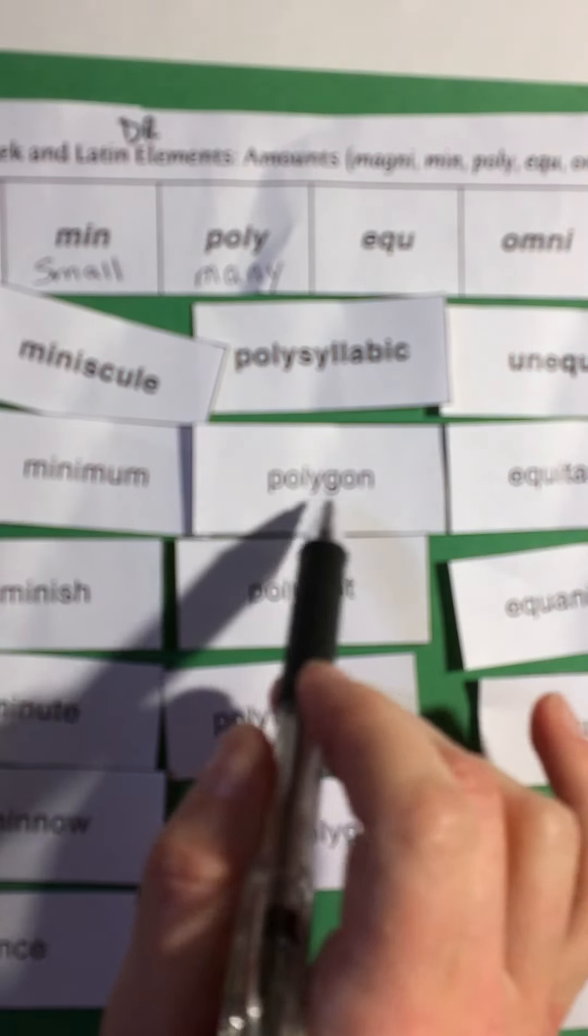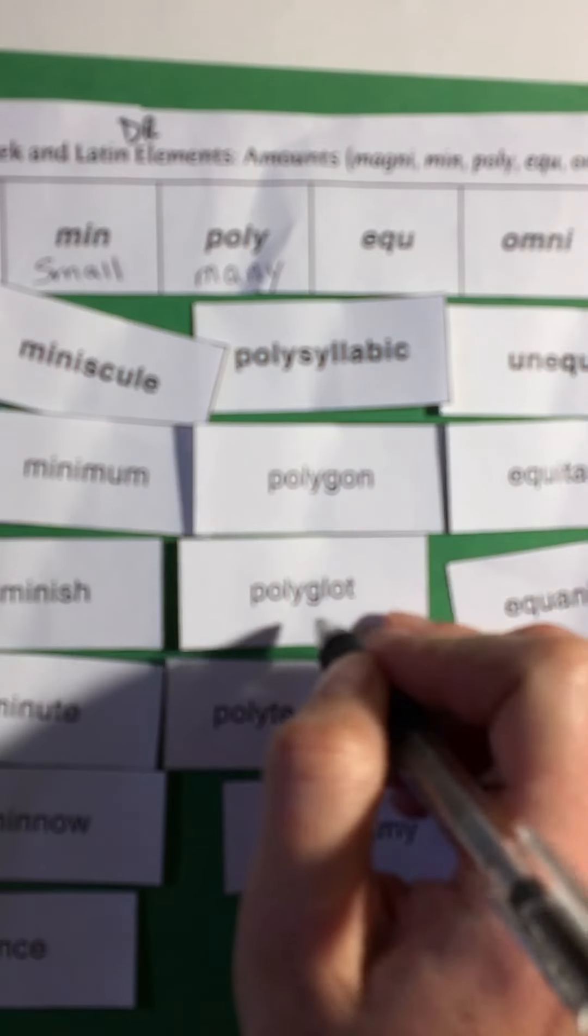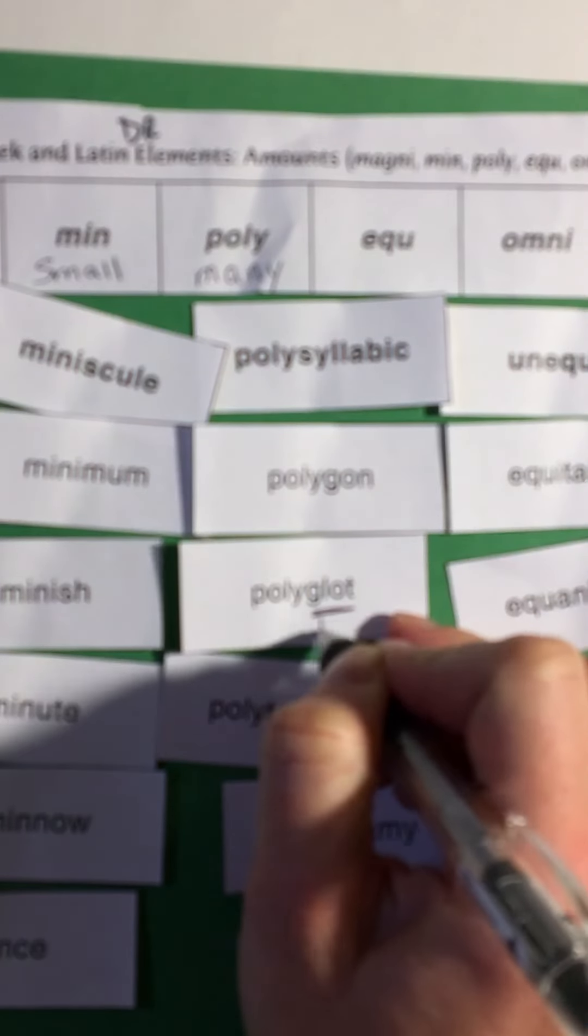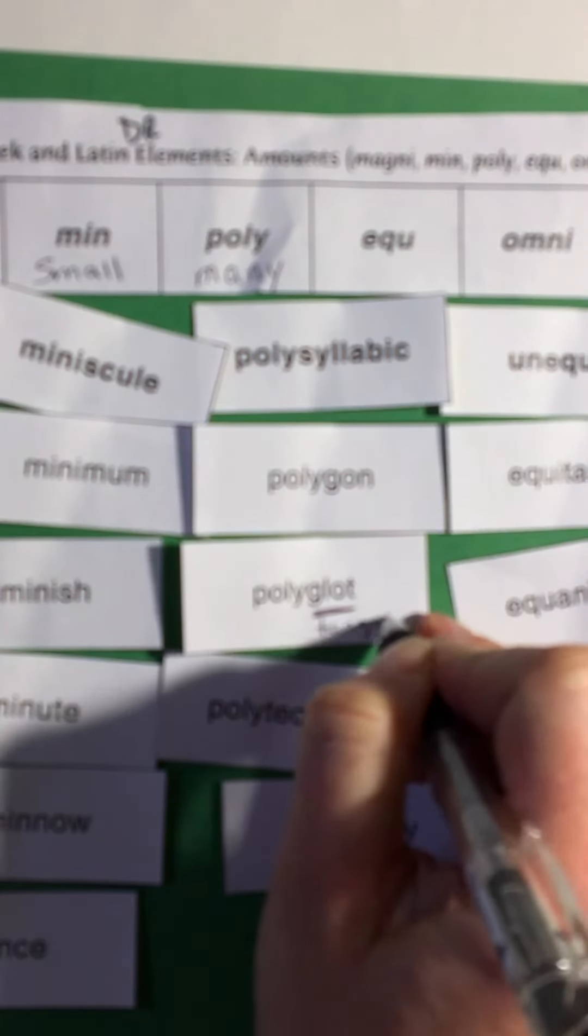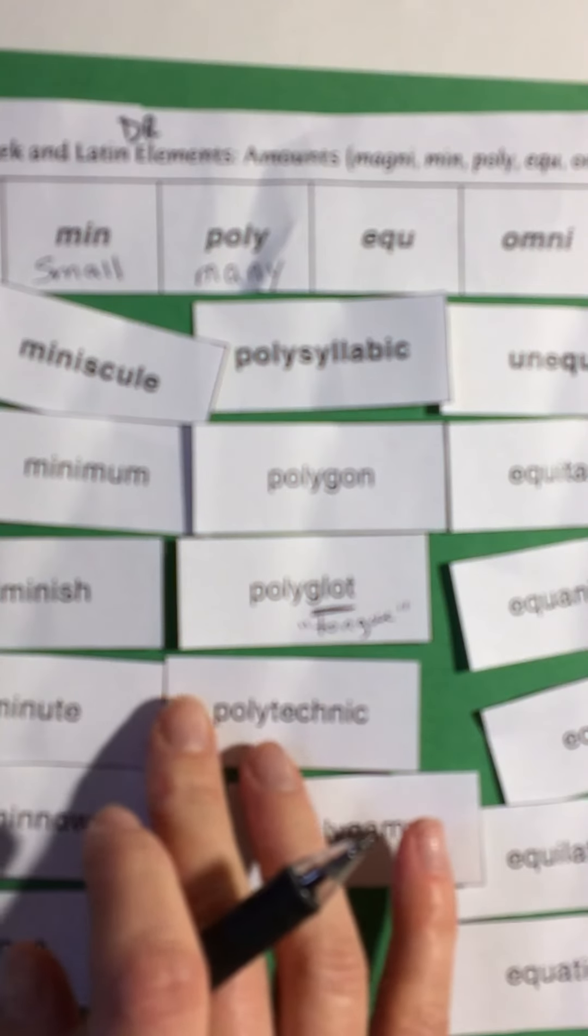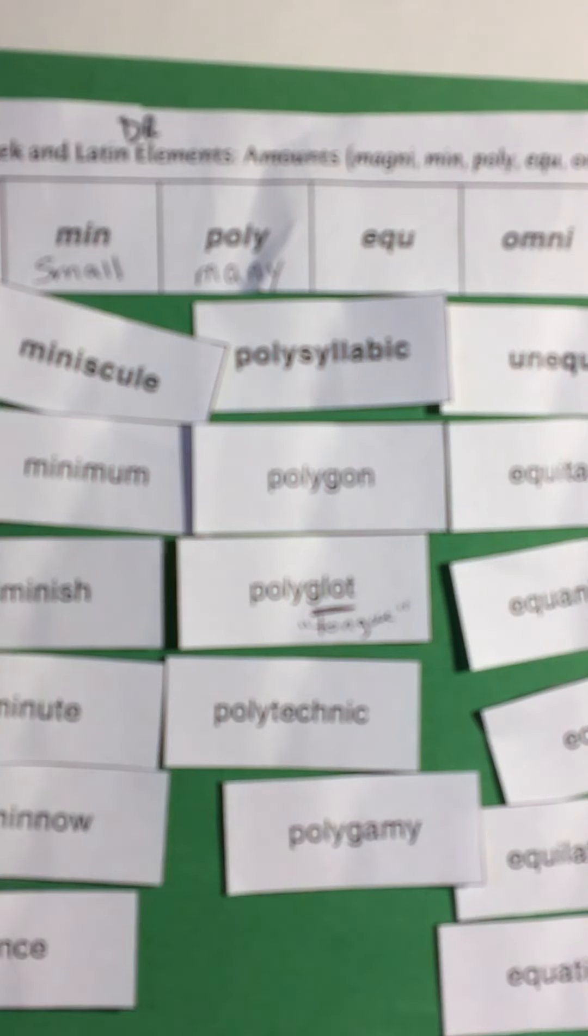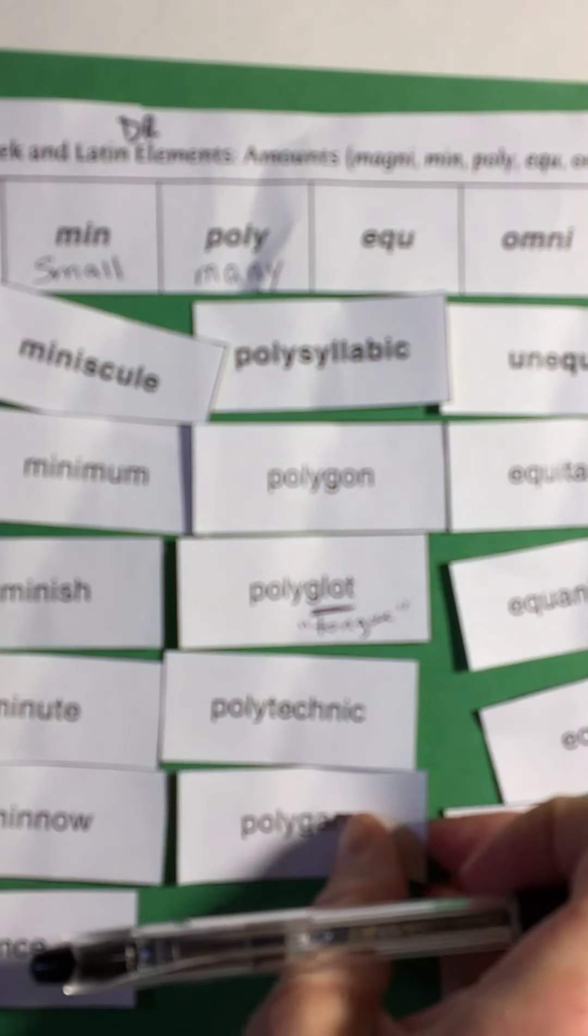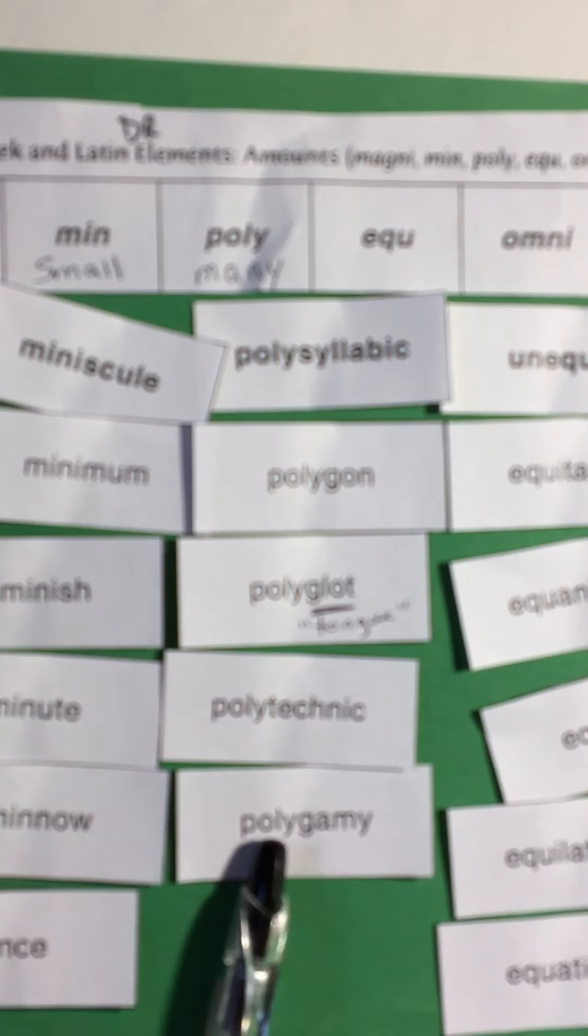A polyglot, this means tongue, but it doesn't mean someone who has a lot of tongues. It means someone who can speak a lot of languages because sometimes a language is called a tongue. Polytechnic, there's some schools that have this as their name. A polytechnic school has many subjects in different areas, many classes. Polygamy means when you have more than one husband or wife.